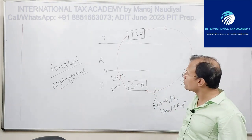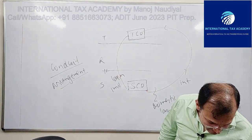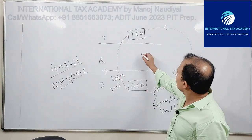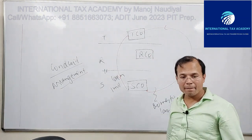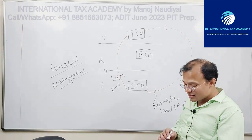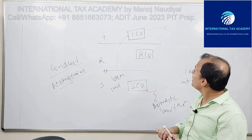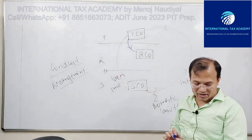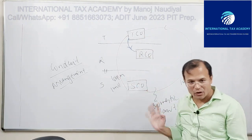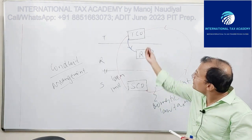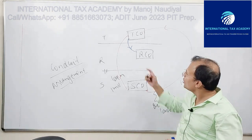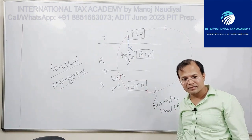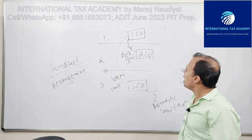Tyco wants to avoid that. What does it do? It creates a subsidiary. And it assigns the note — it assigns that loan because the loan is owned by Tyco. Tyco is the owner of that loan. So Tyco assigns that loan to Arco.